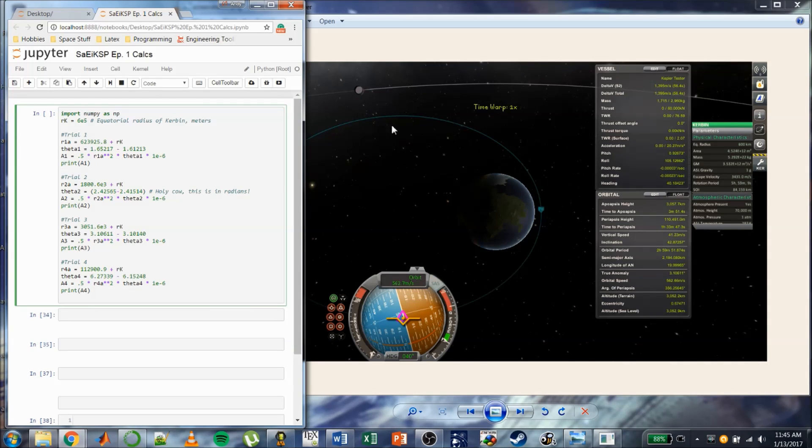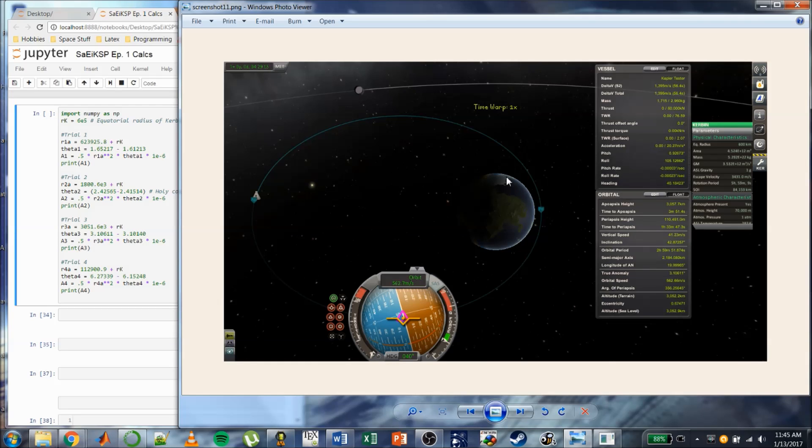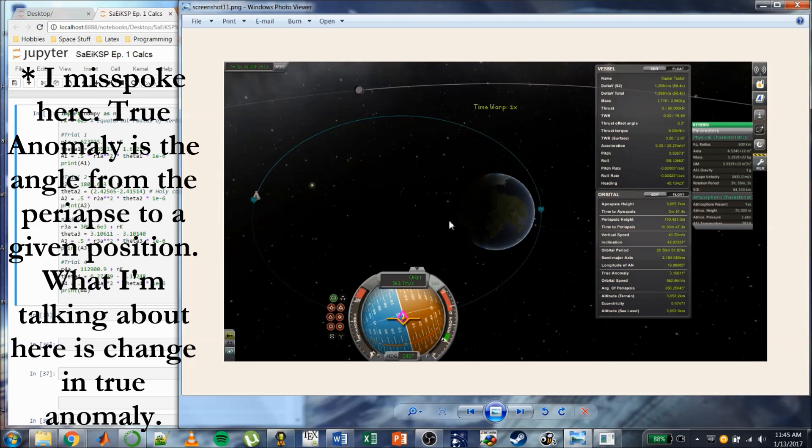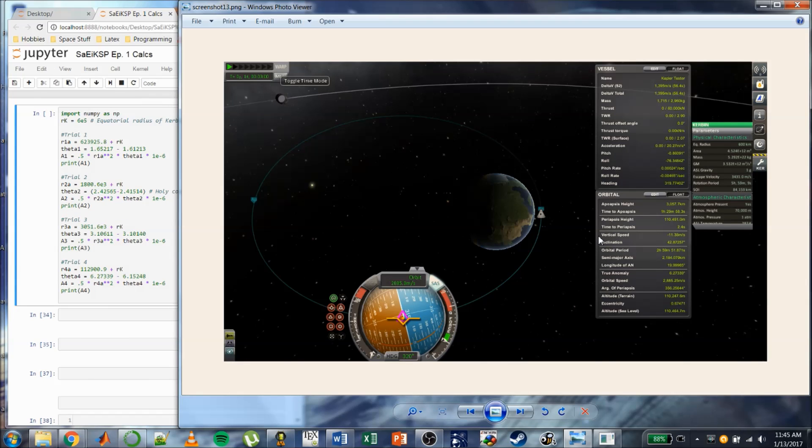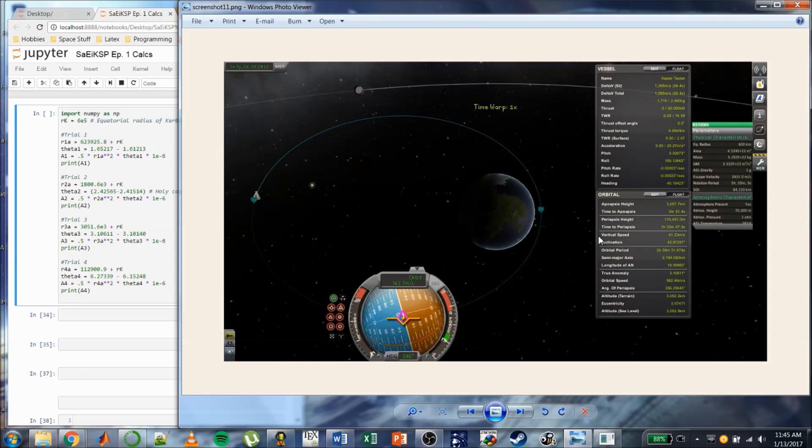For now, all you need to know is that the true anomaly is the angle in between these two segments. So like, you see this little flip book I'm making here? where the true anomaly is the angle that that traces out.